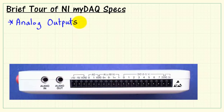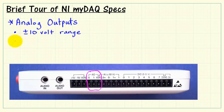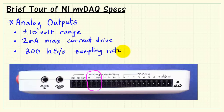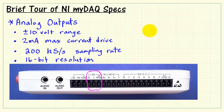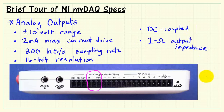In terms of the signal connections and power supplies, let's begin with the analog outputs. We have a pair of analog outputs. These have a plus-minus 10 volt range, 2 milliamp maximum current drive, 200 kilo samples per second sampling rate, and 16-bit resolution. These inputs are DC coupled and have a 1 ohm output impedance.